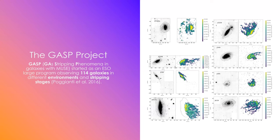The work I will present here is part of the GASP project. GASP is a large program that observes over 100 galaxies to understand gas removal processes in galaxies in clusters and also in less invasive environments. The main galaxies we are interested in are the jellyfish galaxies — these galaxies that, if you look at the H-alpha maps, have these long tails of ionized gas.